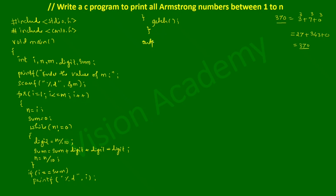Now let us check what output we get. Once we compile and run the program it will ask the user to enter the value of n. For example, we enter 500. It is going to iterate this for loop 500 times because 500 is stored in variable n. For the first time i is 1; 1 is less than or equal to 500, which is true, so control enters the body of the for loop.